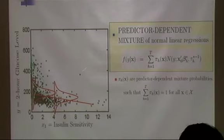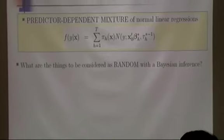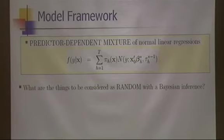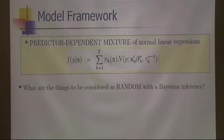With this model framework, we pursue Bayesian inference. Since we're doing Bayesian inference, I need to think about which components to make random and assign prior distributional assumptions, in order to achieve flexible estimation and variable selection. In the predictor-dependent mixture of normal linear regression model, we want to let certain components be random and let the data determine their optimal values.